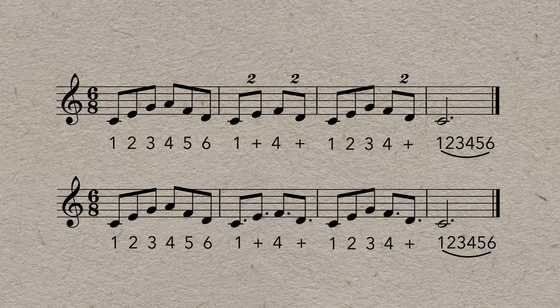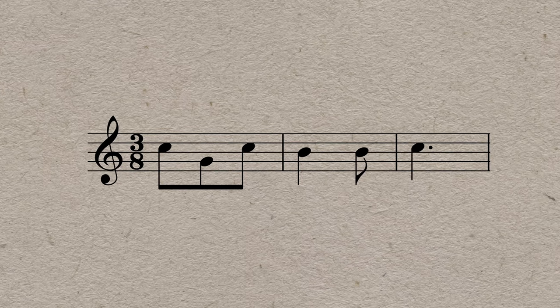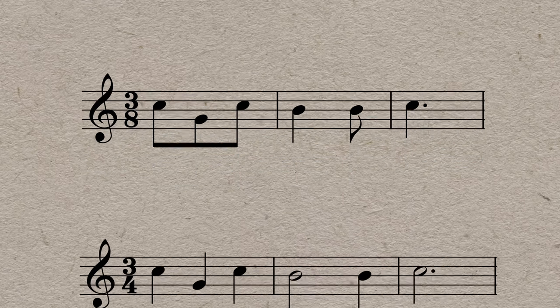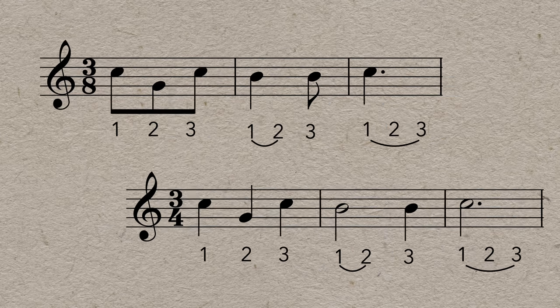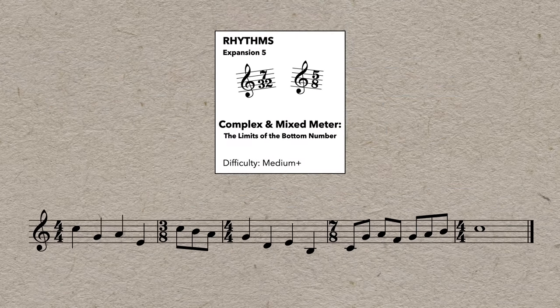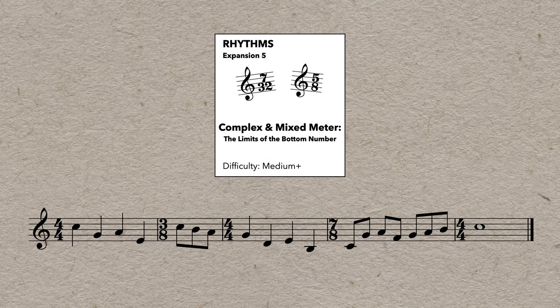The only version of compound time we haven't looked at yet is 3-8, which is also possible but not commonly used, because it doesn't really offer any advantages over 3-4 time. But 3-8 does show up mixed with other time signatures in the same piece, which brings us to our next expansion, complex and mixed meter.